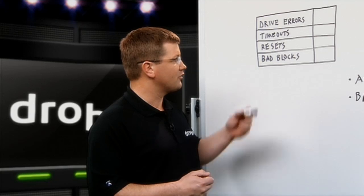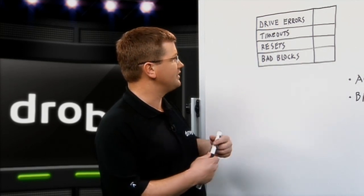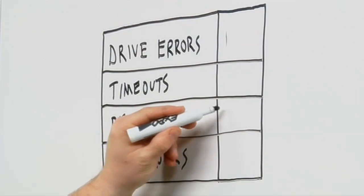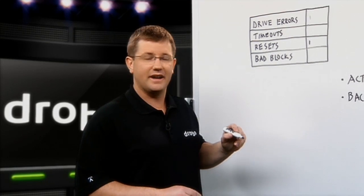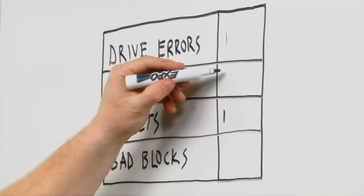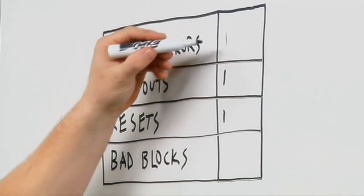So as drive errors occur, for each drive in a Drobo we're creating a counter or a table. Sometimes you get one drive error, or sometimes the drive's unresponsive and we may need to reset it, or the drive just may be not responsive and may time out and we have to reissue a command, and we'll track these as they go on the drive.